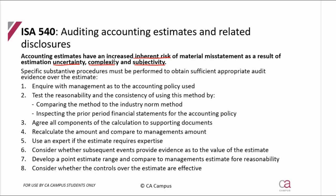Before auditing an estimate, first find out the accounting policy — inquire with management as to the accounting policy used (one mark). Before testing whether the policy has been applied correctly, ensure the policy is reasonable and consistently applied. To test reasonability, compare their method or accounting policy to the industry norm (one mark). To test consistent application, compare the accounting policy in the prior year financials to the current year, confirming the method hasn't changed.